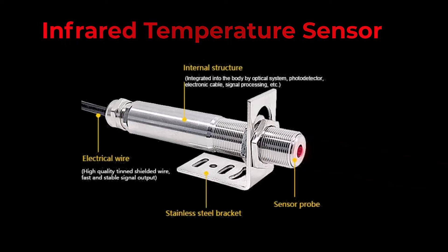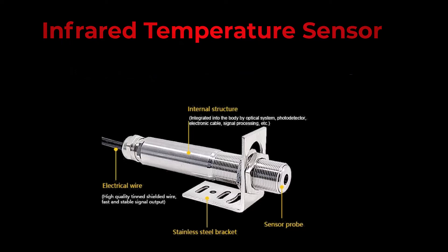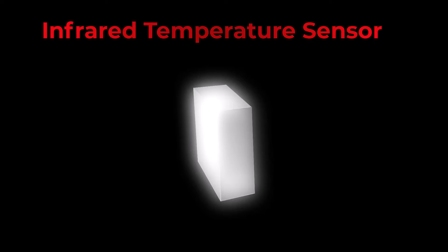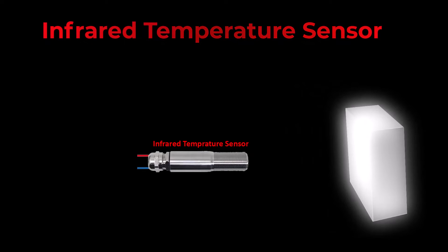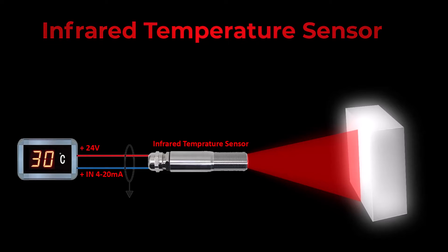Industrial IR thermometers have an extensive temperature range, usually between minus 50 degrees Celsius and 1000 degrees Celsius. All objects with a temperature above absolute zero emit infrared radiation, and the intensity of this radiation is directly related to the object's temperature. The infrared sensor consists of a lens that focuses the infrared radiation onto a detector, which converts it into an electrical signal. The electronics then process this signal to calculate the object's temperature based on the intensity of the detected radiation.